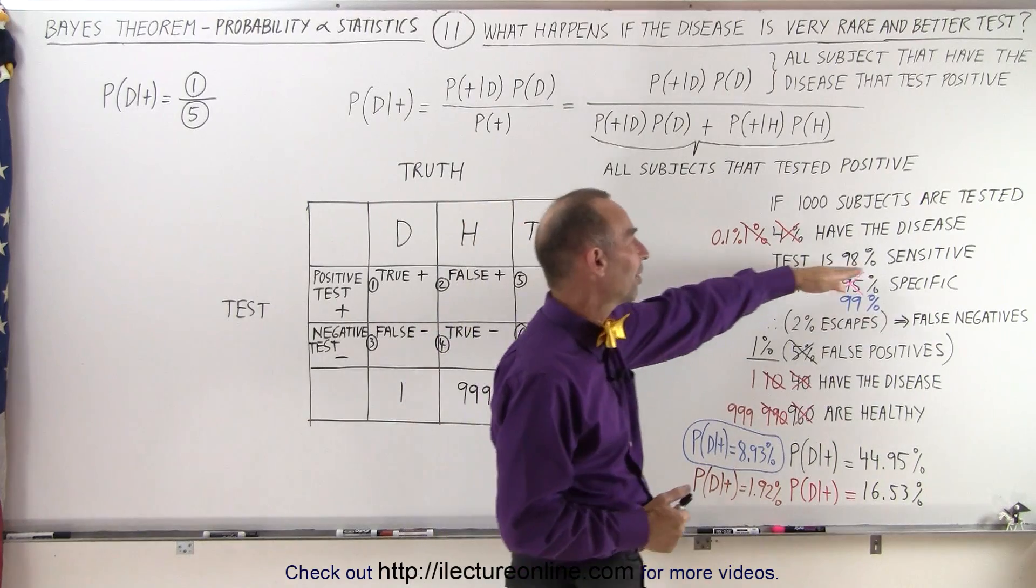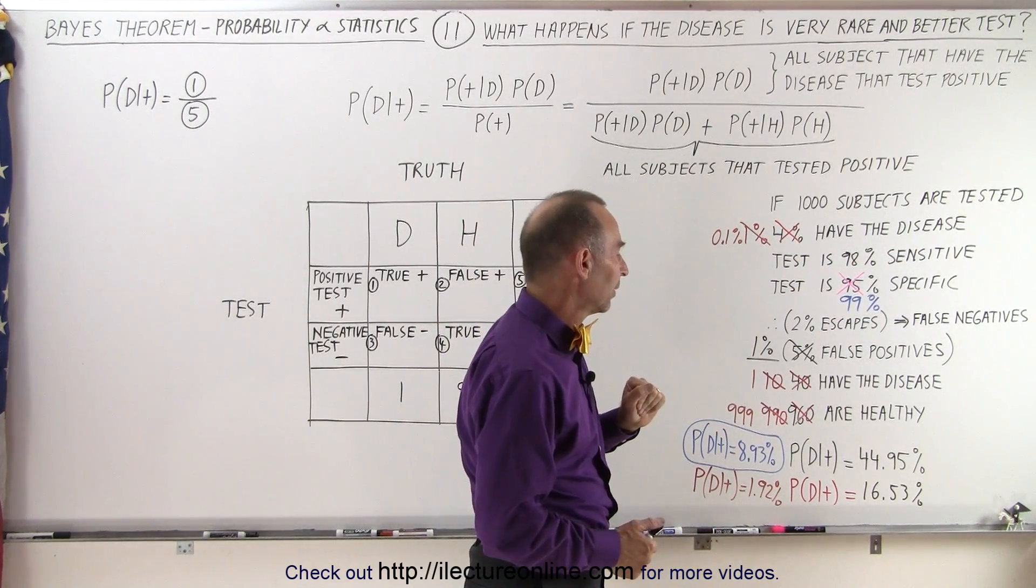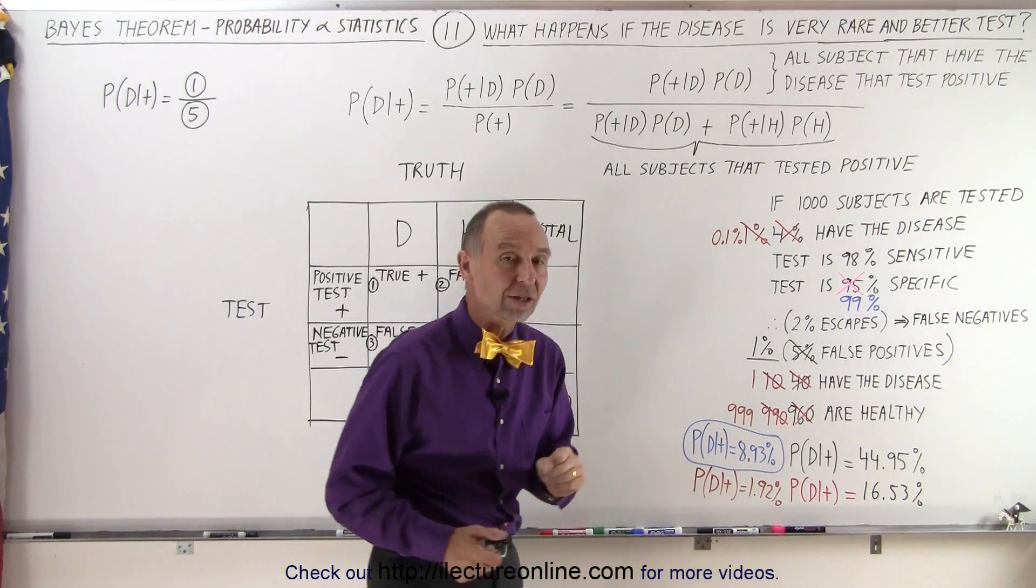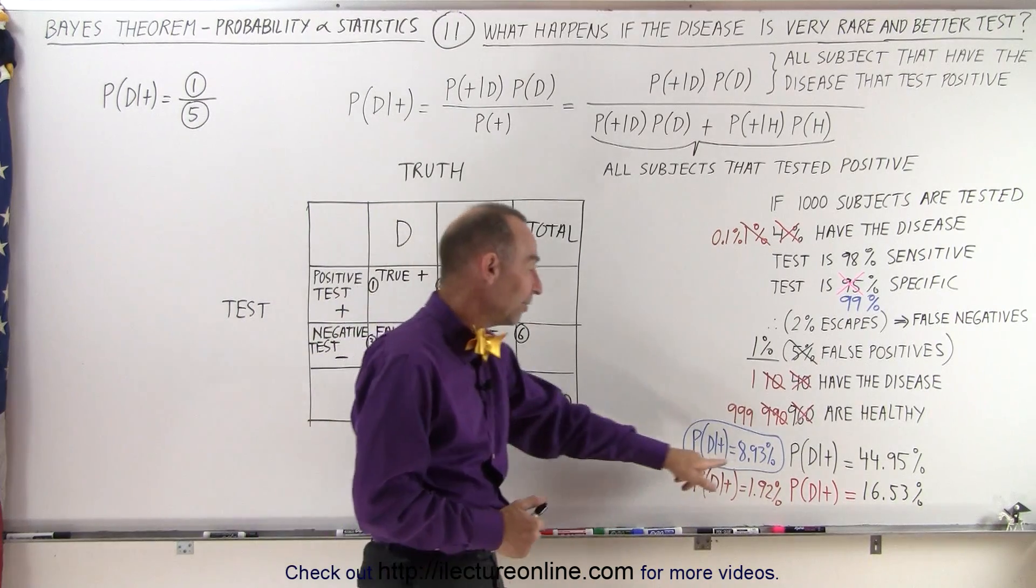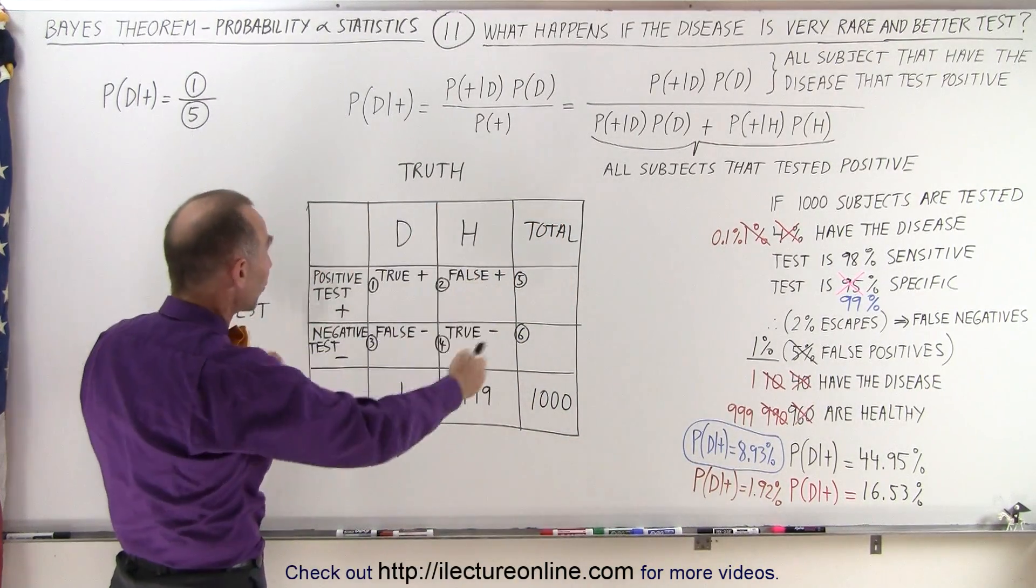and we have a test that is 98% sensitive and 99% specific, what will be the probability that if you test positive that you actually have the disease? And so we saw that in that case it was 8.93%, but now we're going to do it using the table format.